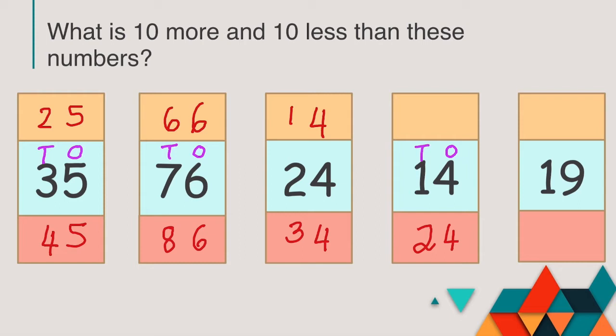What about 10 less than 14? You only have 1 ten. So if you take away 1 ten from 1, you are left with 0 tens and only a ones digit. So your answer would be 4. So 10 less than 14 is 4.